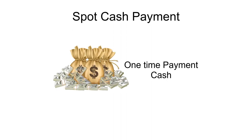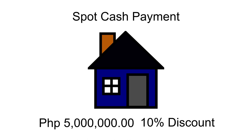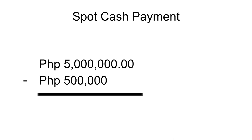Let's start with spot cash payment. When we say spot cash, it is a one-time payment through cash — meaning you're going to pay the full amount of the property you purchased at once. For example, you purchase a unit of five million and the developer gives you a term discount of 10%. This term discount is usually given when you choose spot cash payment. From the five million price, less the 10% term discount of five hundred thousand, your net selling price is four point five million.